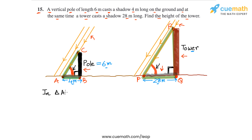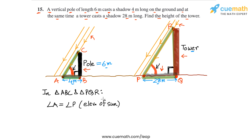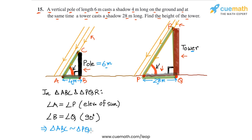In triangle ABC and triangle PQR: angle A equals angle P, because the elevation of the sun is the same — the shadows are being measured at the same time. And angle B equals angle Q, because the pole and the tower are both vertical, so both angles are 90°. Therefore, triangle ABC is similar to triangle PQR by the AA similarity criterion.